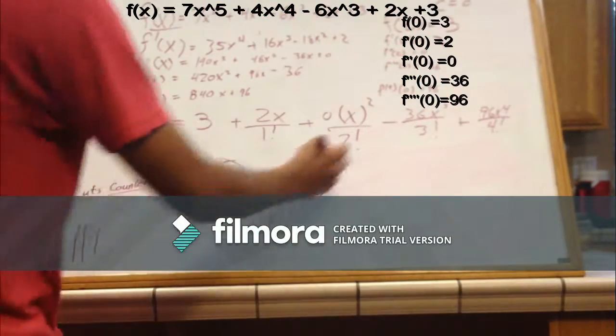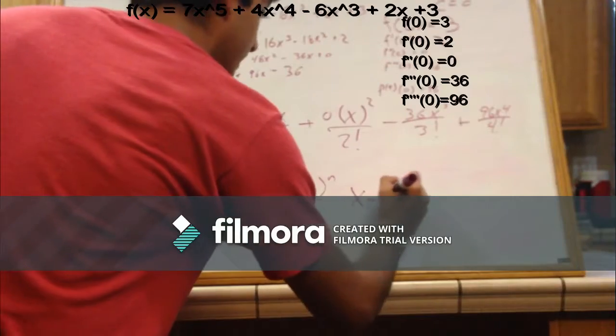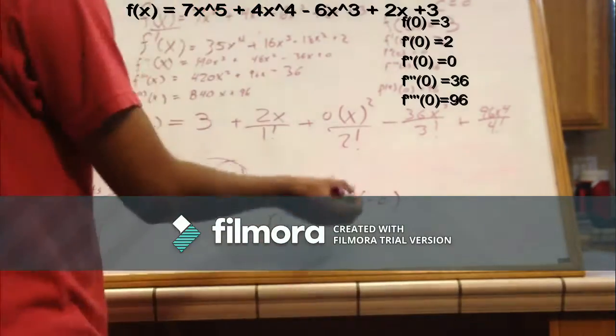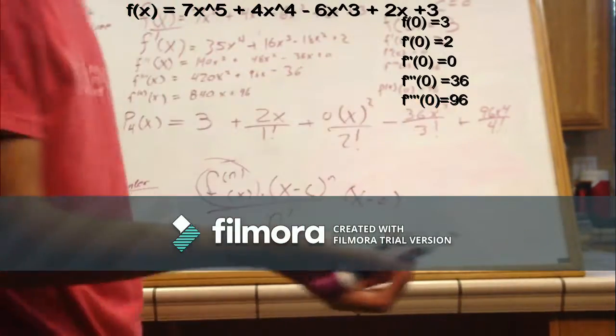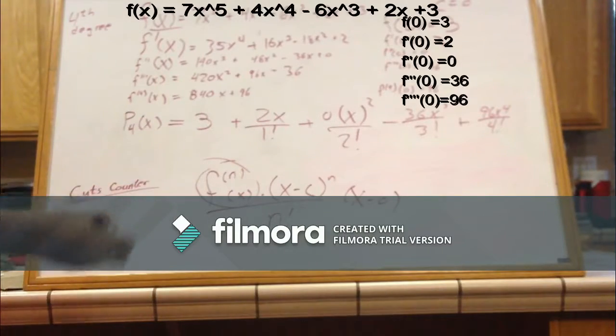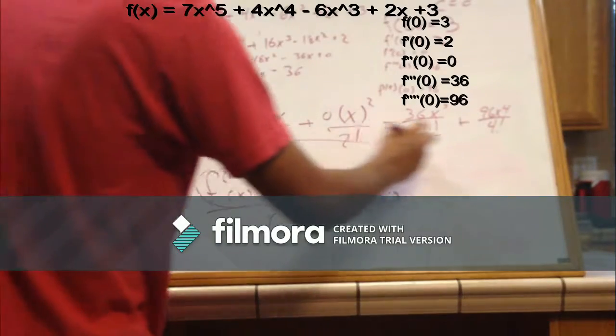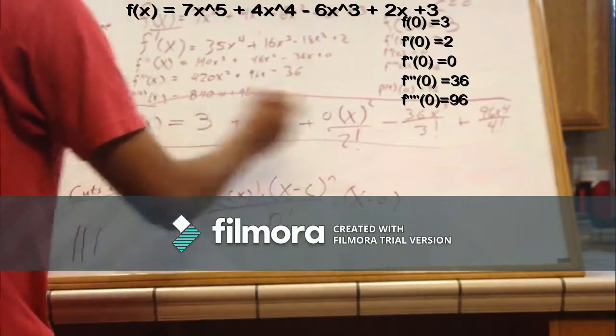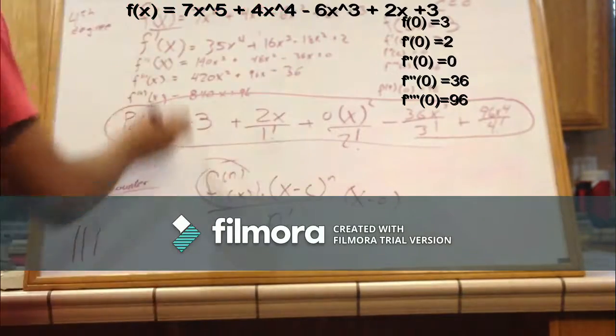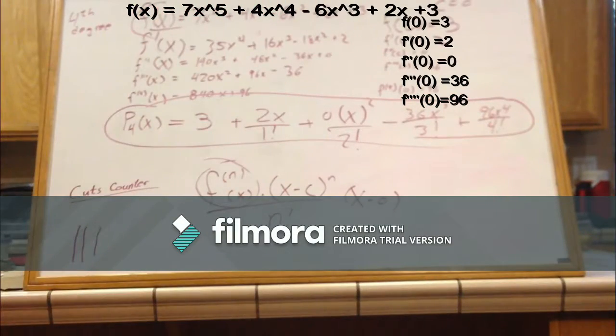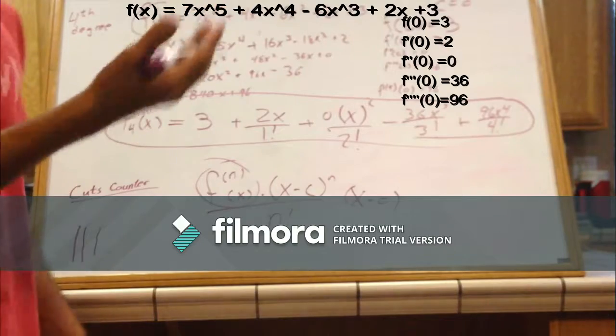And then normally these are x minus c's, however, I didn't want to write x minus zero on each one, so I feel like I can just simplify it to x each time, for convenience. So this right here would be our new fourth-degree Taylor polynomial for this equation, centered at x equals zero, or c equals zero.